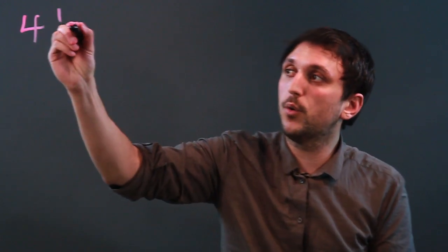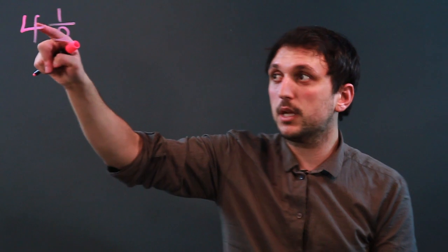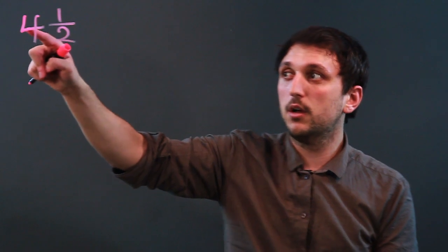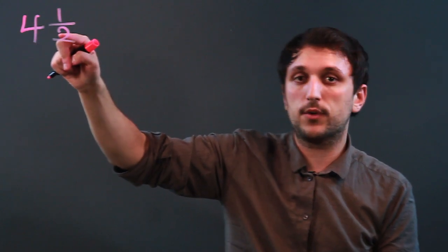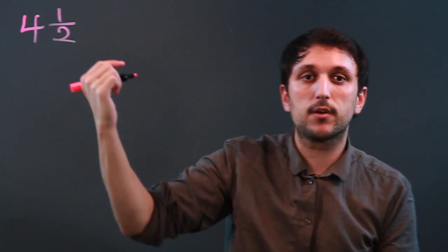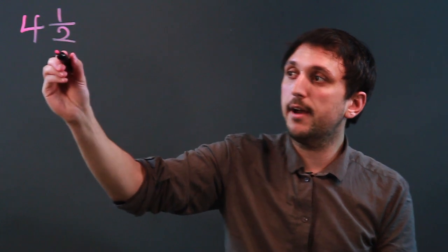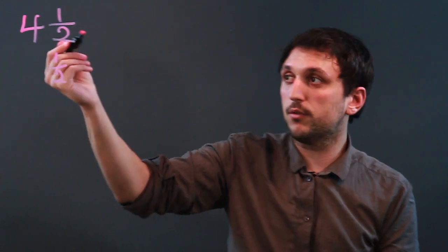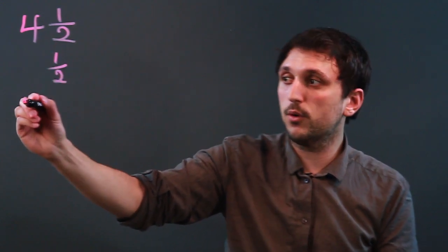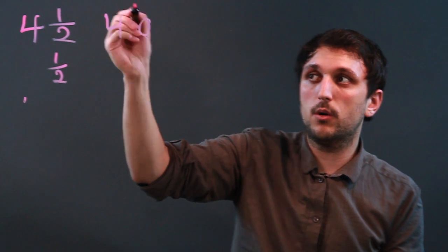Let's take the mixed numeral four and one-half. It's mixed because we have the number four and a proper fraction one-half. So one-half is the problem here, because if we just said four, that would just be 4.0.